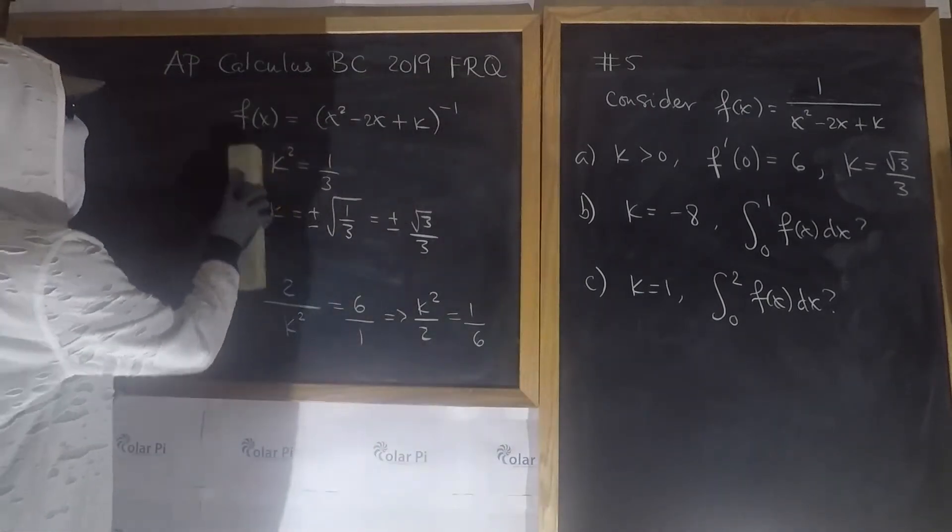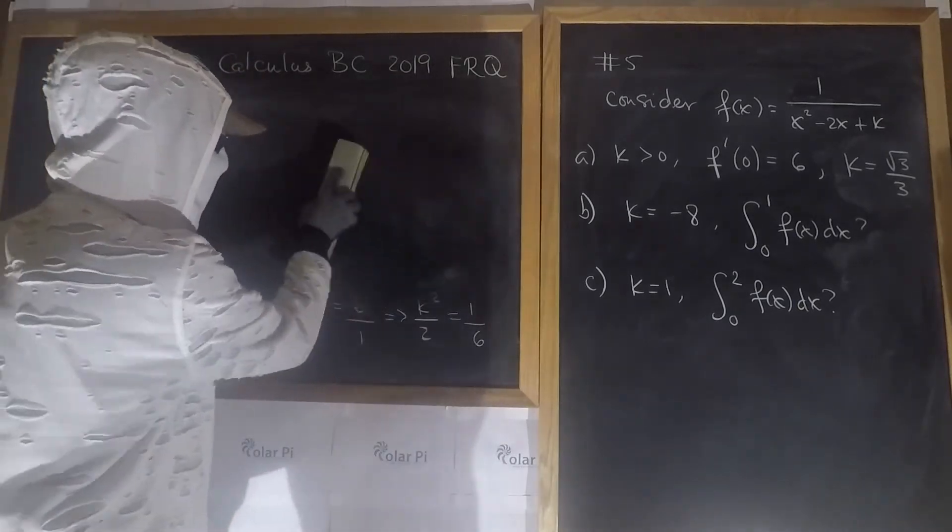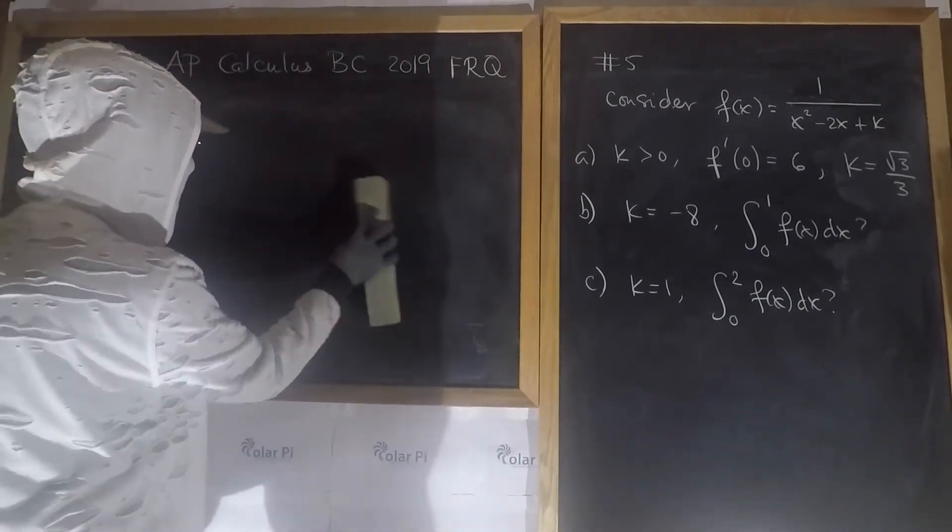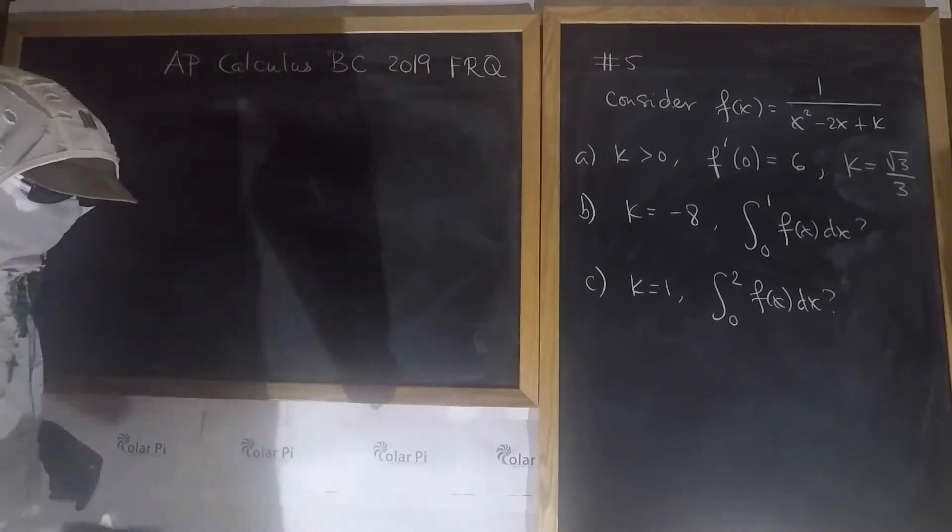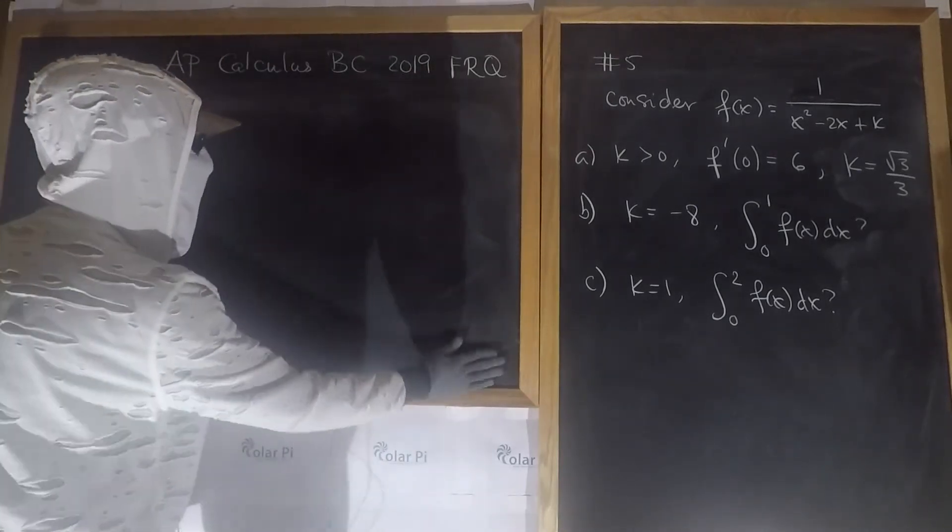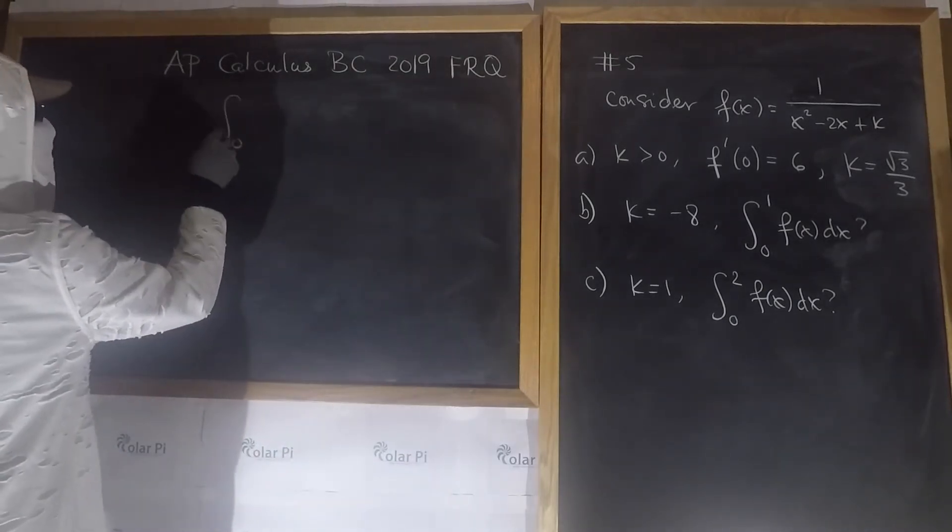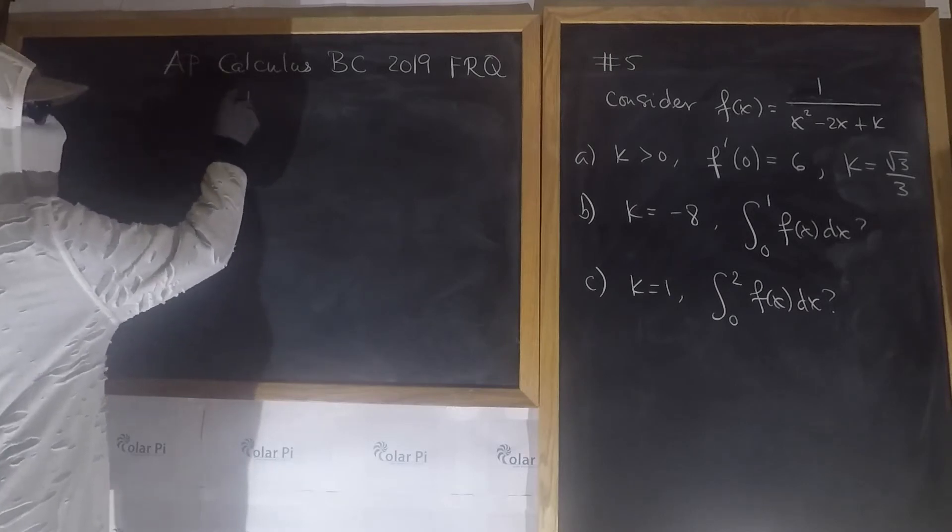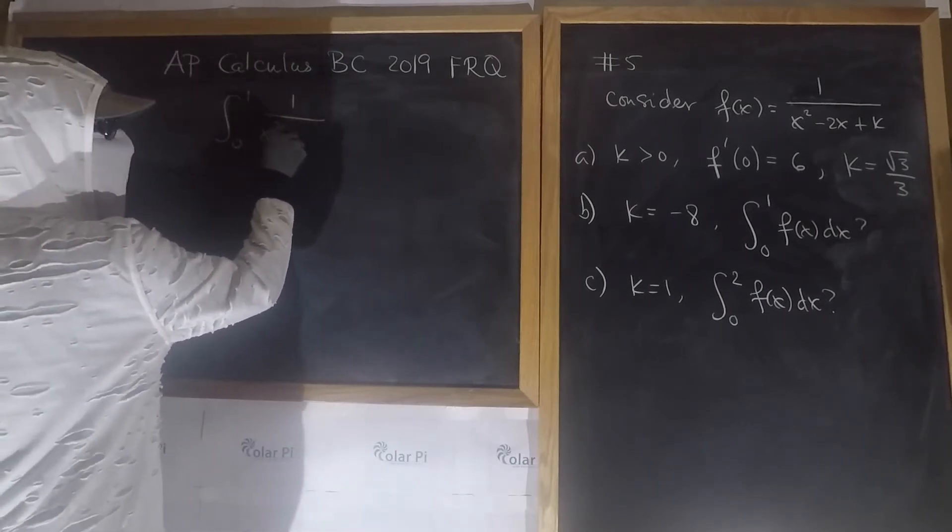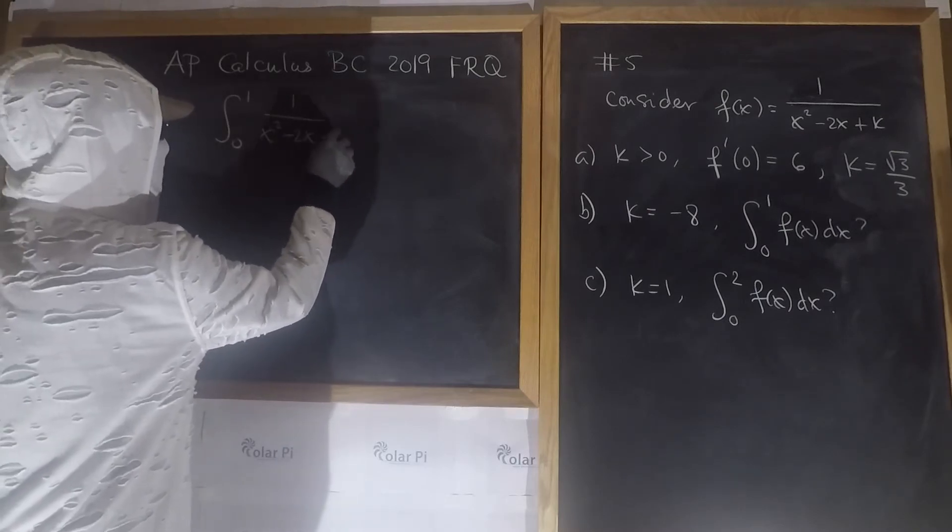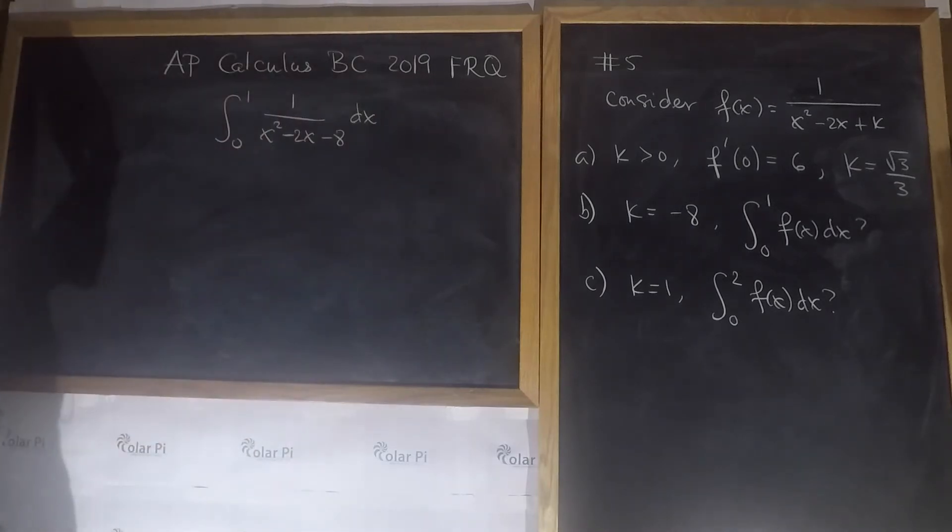Now let's do B. And B is saying that we know k is negative 8, and then we're asked to evaluate the integral from 0 to 1 of 1 over x squared minus 2x, and so knowing k is negative 8 like that, and then dx.